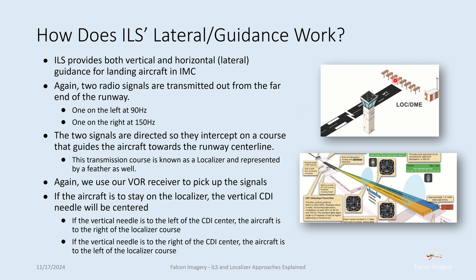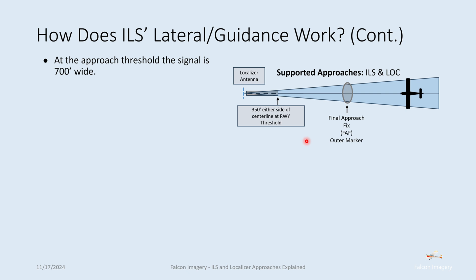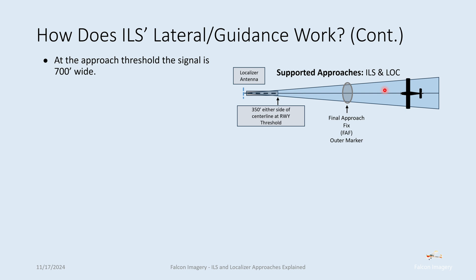The localizer antenna is on the far end of the runway, transmitting both the 90 and 150 Hz signals outward toward approaching aircraft. At the approach threshold, the signal is 700 feet wide — 350 feet either side. The aircraft follows the center beam by keeping the vertical needle centered as it comes in on the approach. Due to runways having different lengths, the angle of transmission varies to ensure that 700-foot-wide signal.